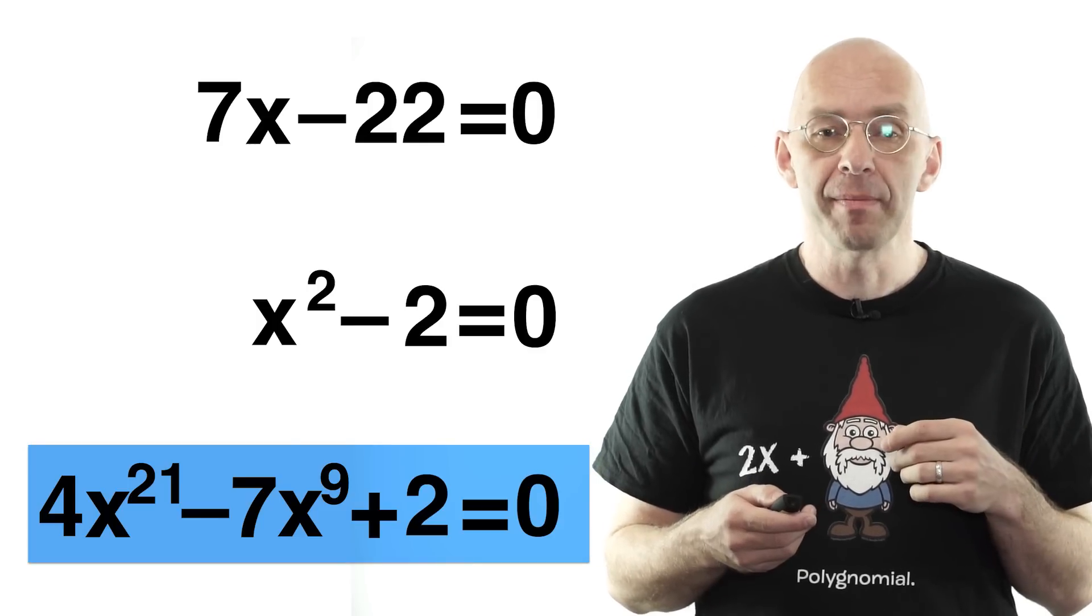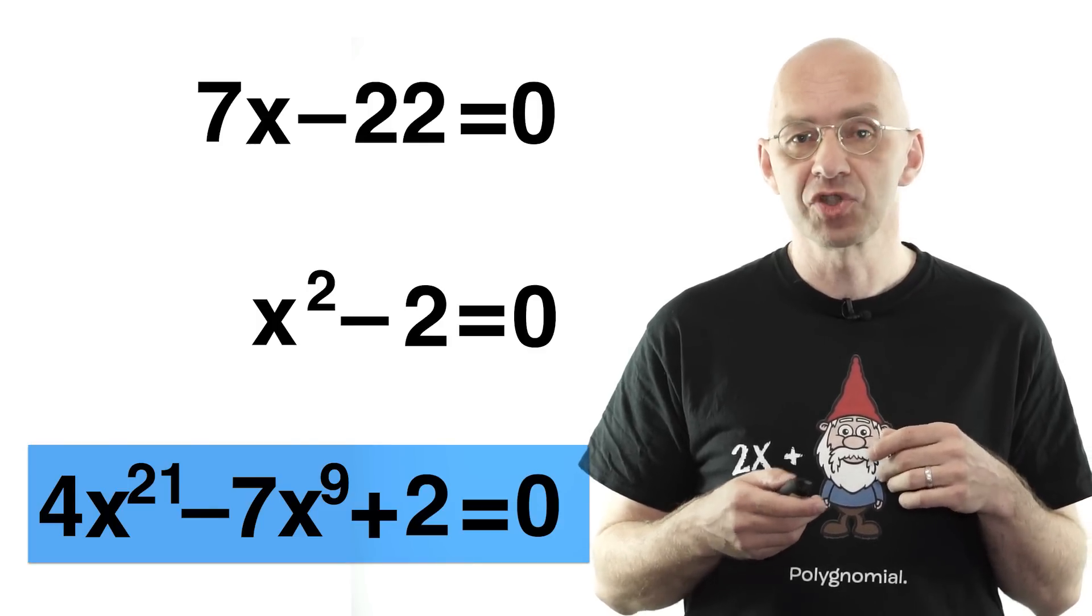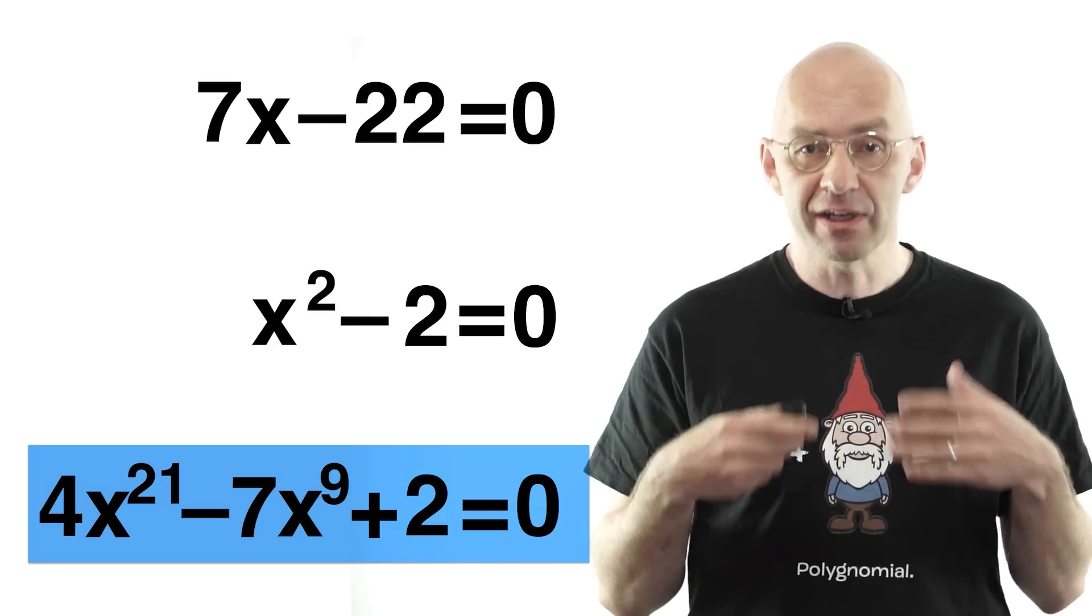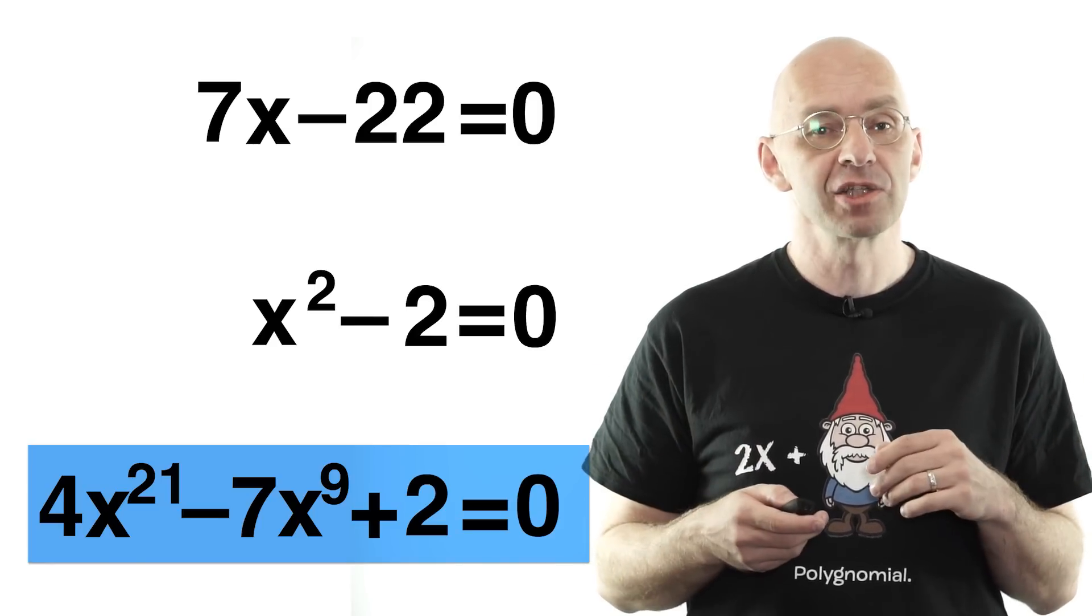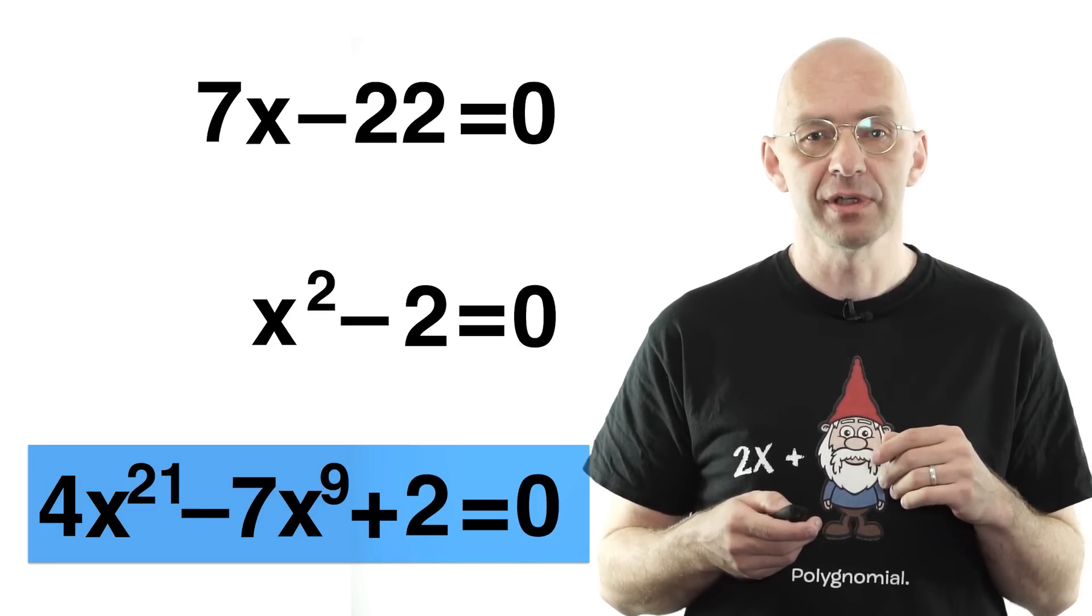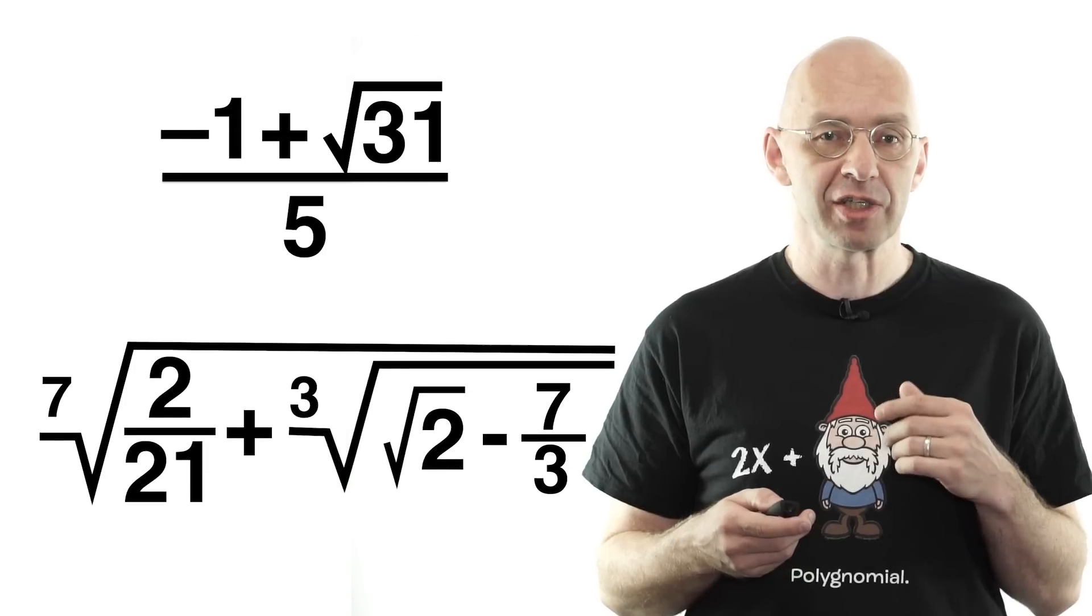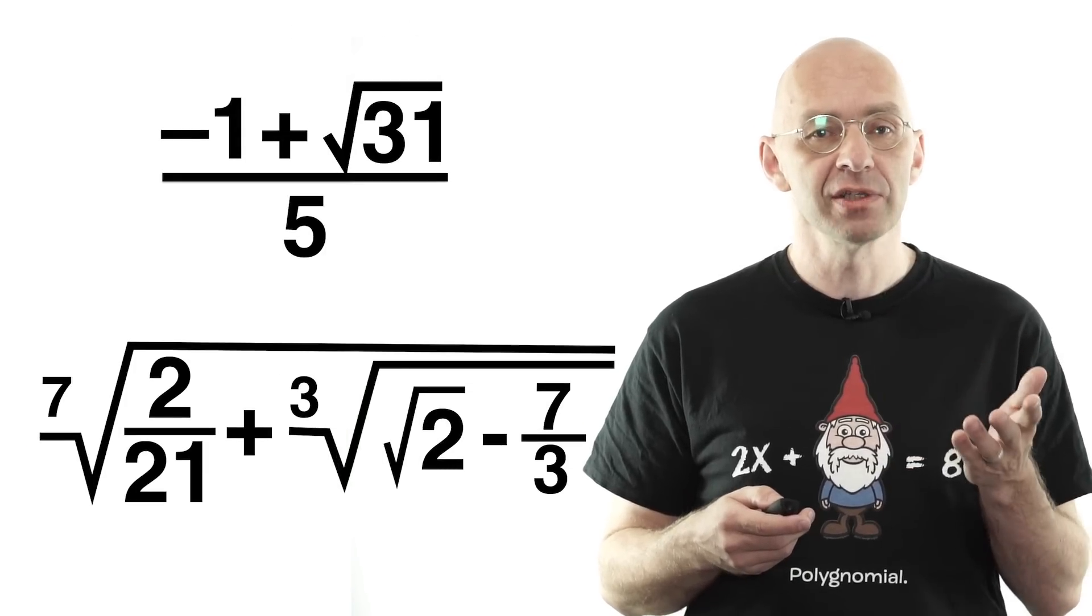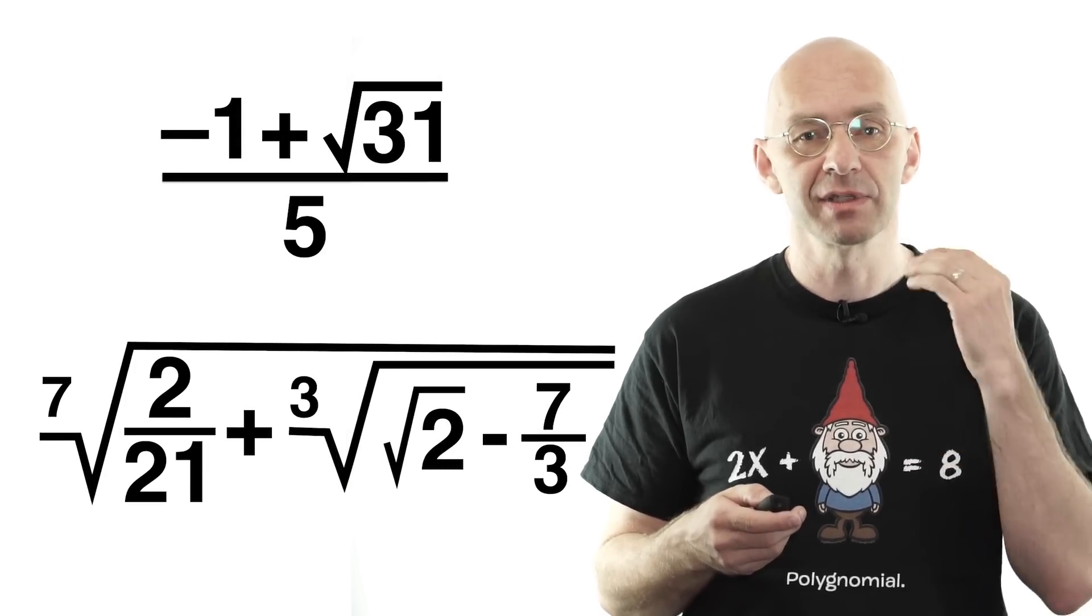The algebraic numbers have a number of amazing properties. For example, just like the real numbers themselves and the rational numbers, they form an algebraic structure called a field.